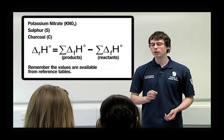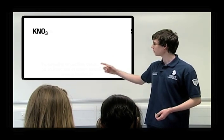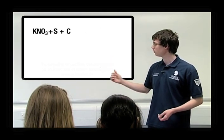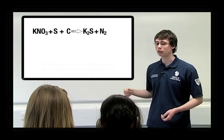So, let's take a simplified equation of black powder. We get potassium nitrate, sulphur and carbon goes to potassium sulphide, nitrogen and carbon dioxide.